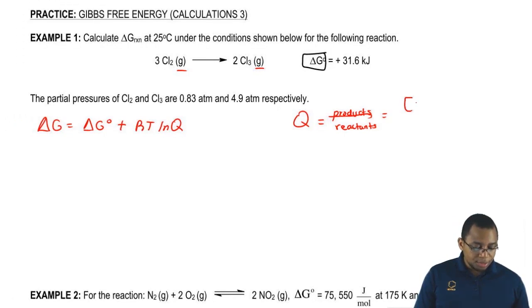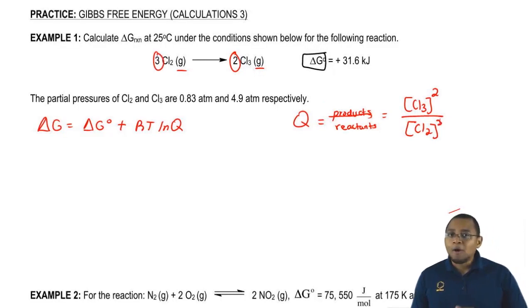We're going to say Q here equals Cl3. The coefficient is a 2. That 2 means this is going to be the power now. Divided by Cl2. Its coefficient is 3, so its power will be 3 as well. The partial pressures of Cl2 and Cl3 are given as these numbers respectively. Those are the values we're going to plug in.